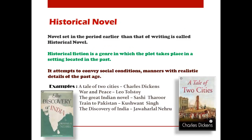Historical novel — as the name suggests, it is based on history. The past events are described in this novel and the setting is in the past. The writer describes the past social conditions and manners, but it is realistic with the details of the past age. Historical fiction is a genre in which the plot takes place in a setting located in the past.